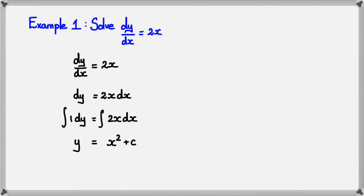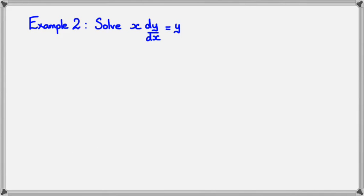Now for the second example, I want to solve x dy/dx = y. This is where problems start happening, because we really can't integrate straight away since there's a y function in there. Unlike the last example where we just had dy/dx = 2x, here we need to separate the variables — all the x's on one side and all the y's on the other.